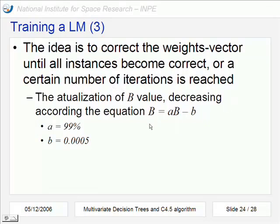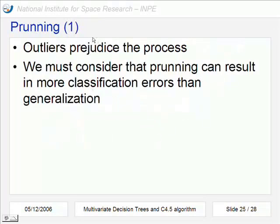And this number will be controlled by this equation that always decreases the value of b, as I already said. In pruning these kind of decision trees, we have to consider two aspects: that outliers prejudice the process because outliers make the tree a little bit specialist in the training set. But at the other side, sometimes the act of pruning can result in more errors than corrections. So we have to balance these two considerations.